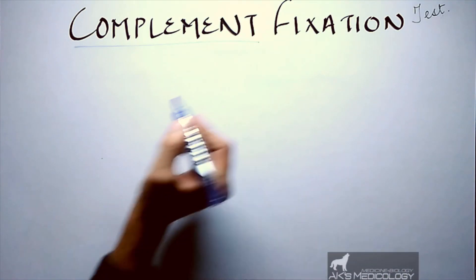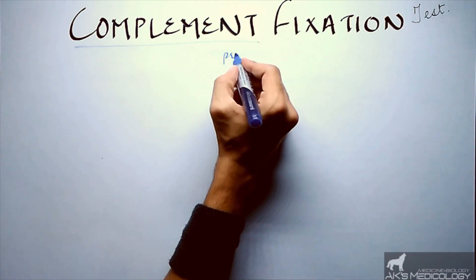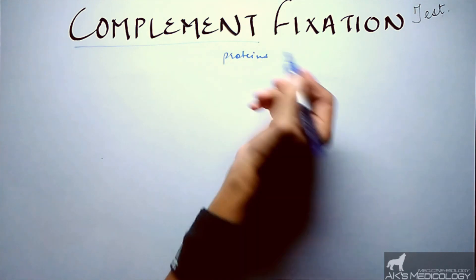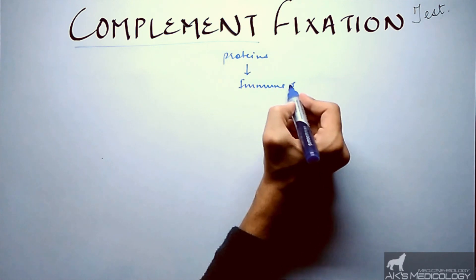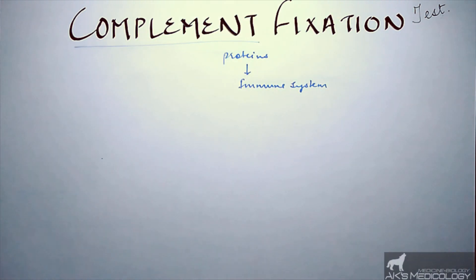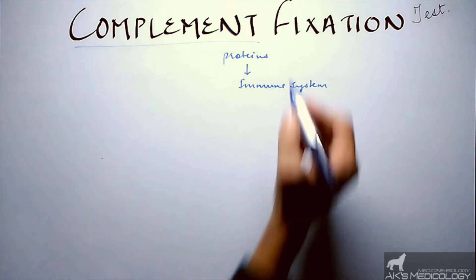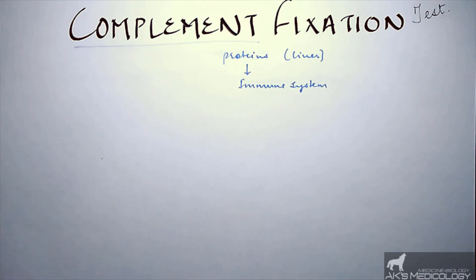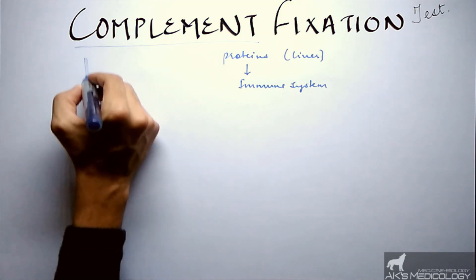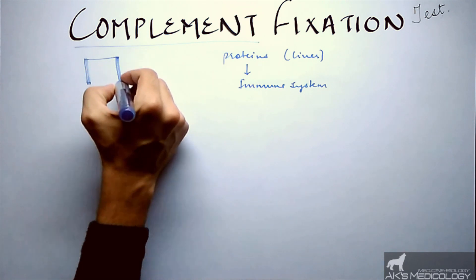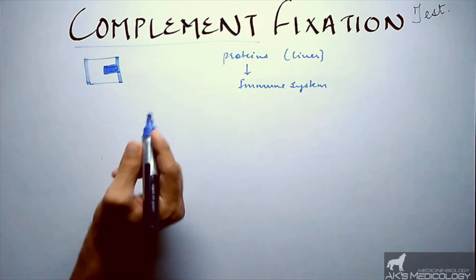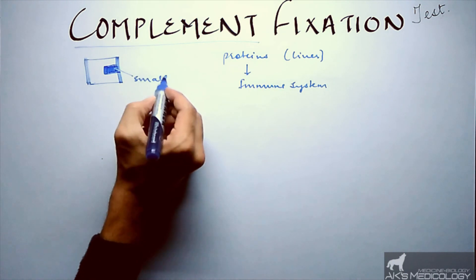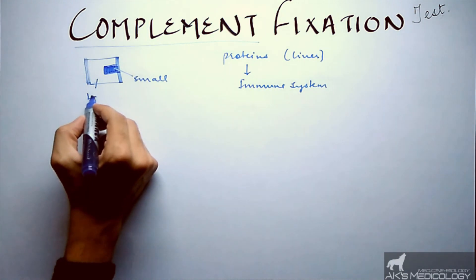The complement fixation test involves fixing of complement proteins, which are an important component of the body's immune system. Complement proteins are formed inside the liver and circulate freely in the blood to provide immunity. The complement protein consists of two main parts: a small part and a large part.